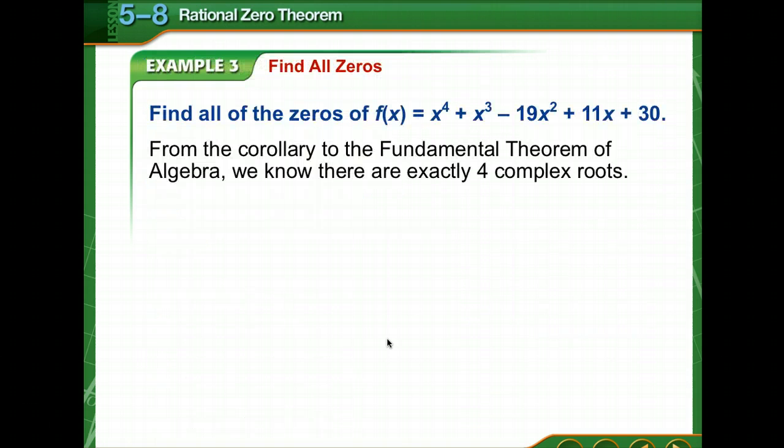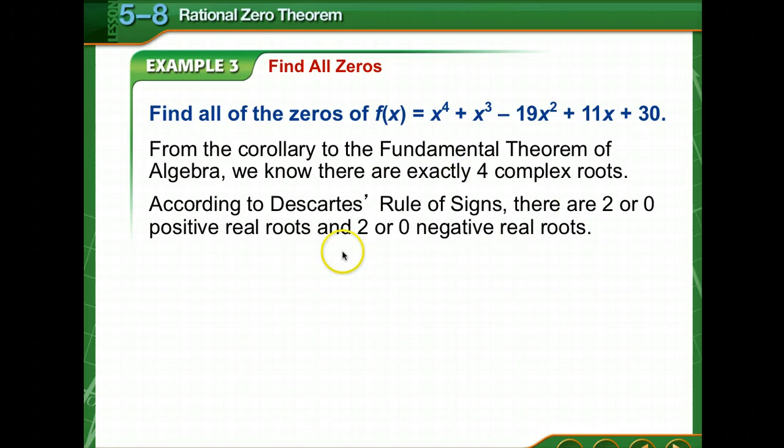We're going to find all the zeros of this polynomial. From the corollary of the fundamental theorem of algebra, we know there are exactly 4 complex roots. According to Descartes' rule of signs, there are either 2 or 0 positive real roots. We change once, we change twice.